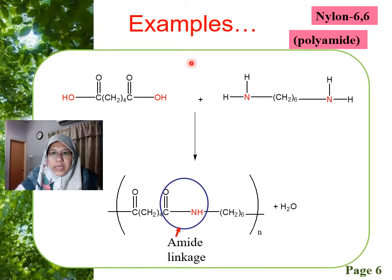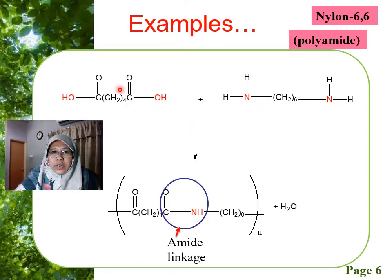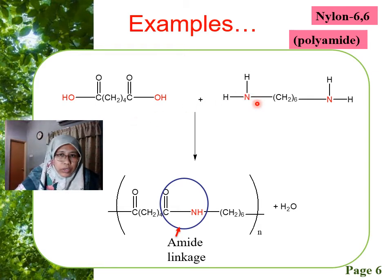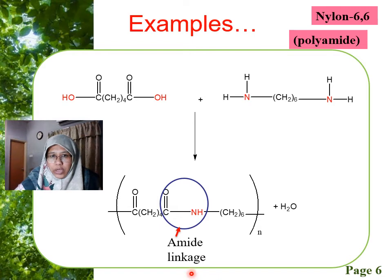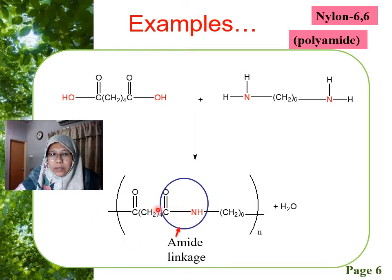The second example is in your course book, page 347: nylon 66. It has two monomers, each with a different functional group. The one on the left is 1,6-hexanedioic acid, and the one on the right is hexane-1,6-diamine. Both monomers have different functional groups — carboxyl group and amino group. We combine both monomers to form a polymer where the amide linkage can be seen, with C double bond O attached to NH. This is the first monomer and this is the second monomer.